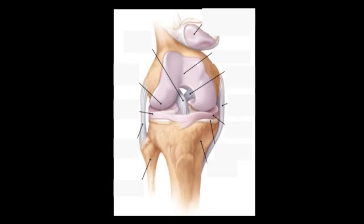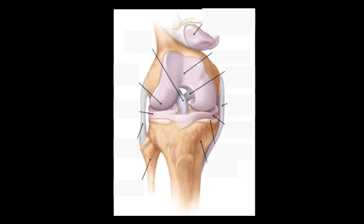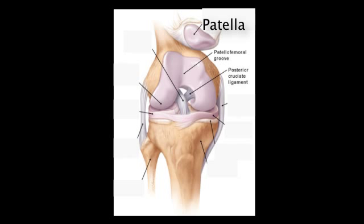Now let's take a closer look at the knee — this is just an introduction since there's much more to it. Here the knee is slightly flexed. We have the femur bone, and the patella normally sits right in the middle of this joint but is peeled away here. The patella would have cartilage on its posterior surface, and it glides up and down in a groove called the patellofemoral groove as the knee flexes and extends. On the inside, in the posterior aspect, is the posterior cruciate ligament, or PCL.